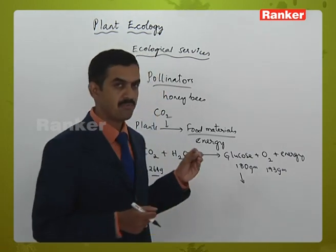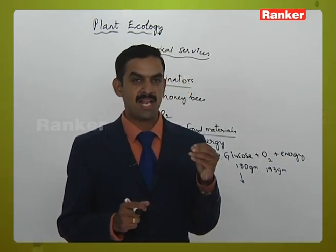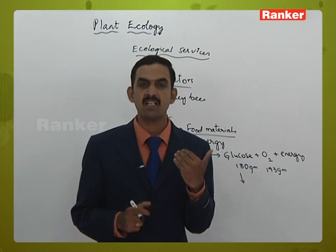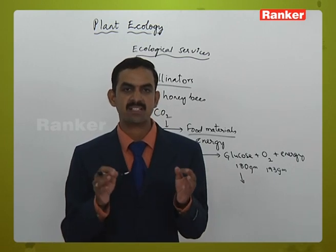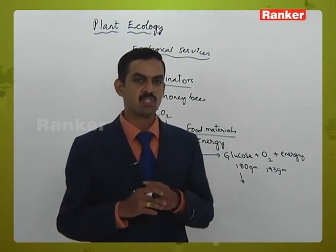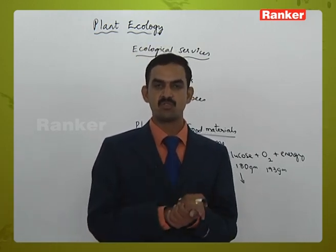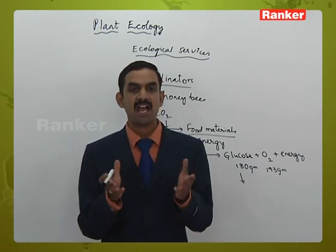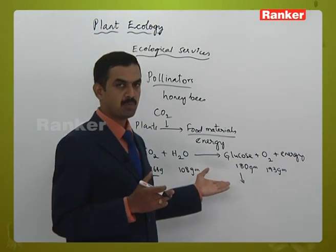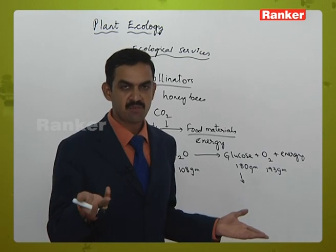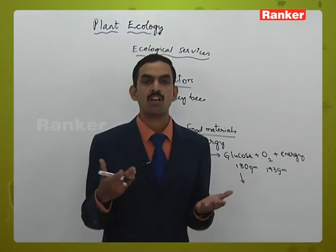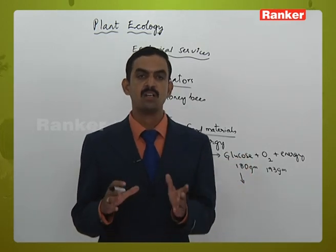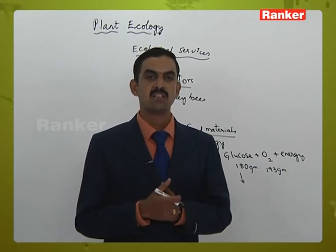Regarding oxygen — plants release oxygen, purifying the environment. Plants take the toxic gas carbon dioxide and release pure oxygen, thereby purifying the environment. Sources of CO2 include industries and combustion of automobile engines. Plants take that carbon dioxide, convert it through photosynthesis, and release oxygen. This is how oxygen as an ecological service benefits the environment. This concludes the brief overview of plant ecology, ecological succession, and ecosystem services.